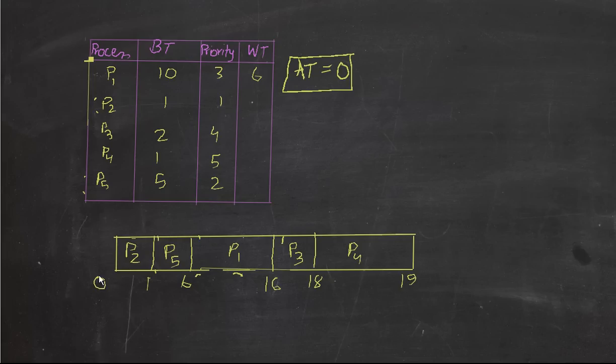p2, the starting time is zero, the arrival time is also zero, so zero minus zero is zero. Alright, so p3, for p3, the starting time is sixteen, the arrival time is zero, so sixteen minus zero is sixteen.